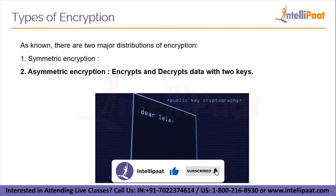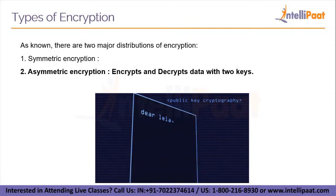For encryption and decryption, asymmetric encryption employs two keys. The data is encrypted using a public key that is shared among users, while the data is decrypted using a private key that is not disclosed. Some of the algorithms used are the Diffie-Hellman Key Agreement Algorithm, RSA Public Key Algorithm, ECC, and others.